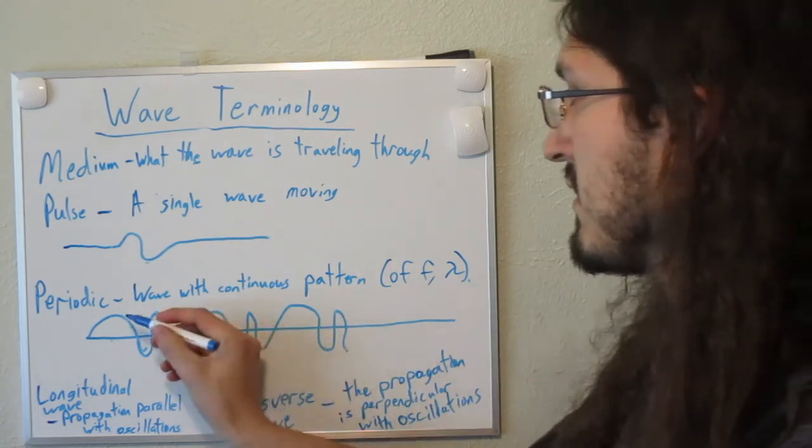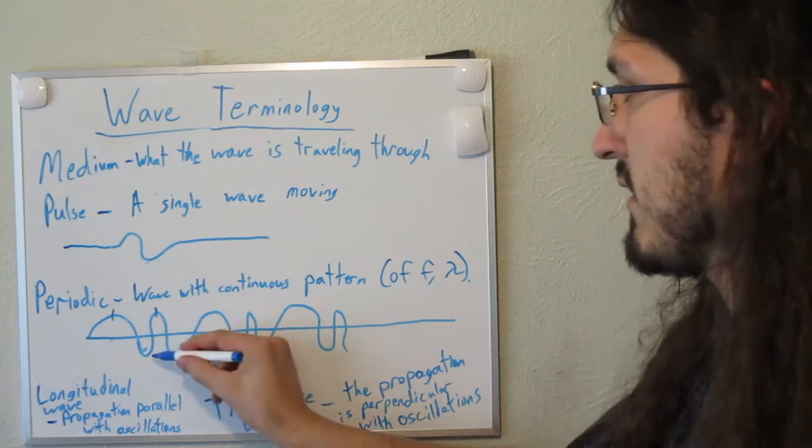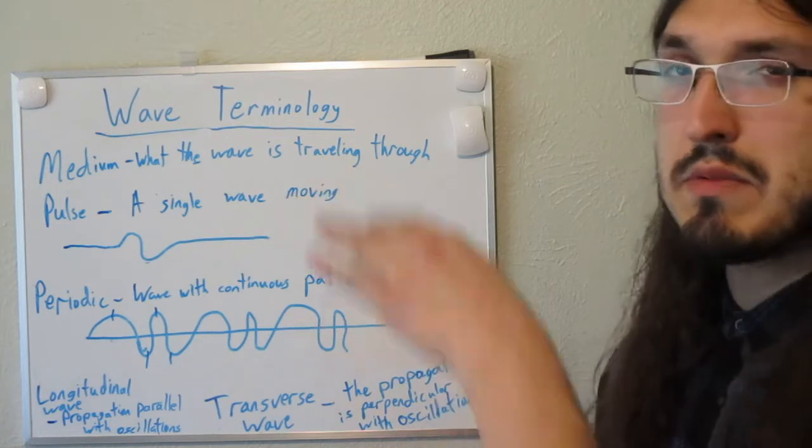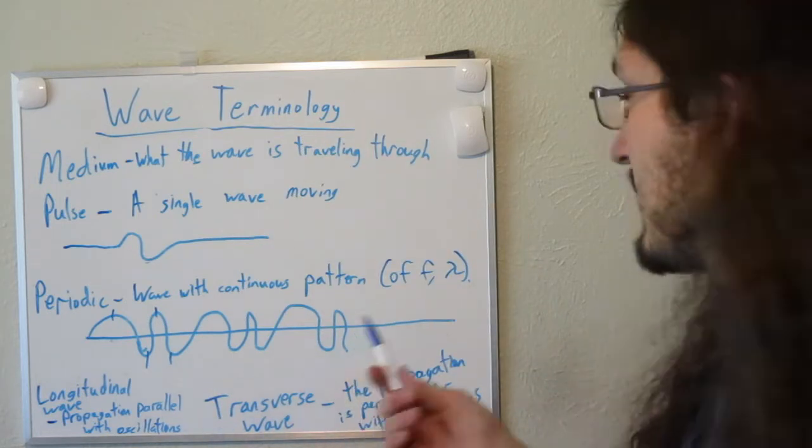So here you can see that the wavelength right here is a lot bigger than the wavelength right here. But then the wave goes back to doing what it did before, and then it just fluctuates between this pattern of shrinking and growing wavelengths and frequencies.